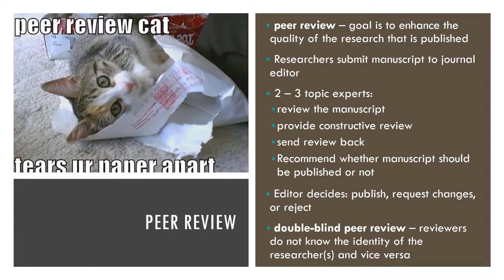Most professional journals in psychology undergo a process of double-blind peer review. Researchers who want to publish their work in the journal submit a manuscript to the editor, who in turn sends it to two or three experts on that topic. Each reviewer reads the manuscript, writes a critical but constructive review, and sends it back to the editor along with recommendations about whether the manuscript should be published. The editor then decides whether to accept the article, ask the authors to make changes and resubmit, or reject it outright. This entire process is double-blind, as the reviewers do not know the identity of the researcher, and the researcher doesn't know the identity of the reviewers.